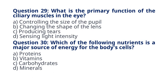Question 30. Which of the following nutrients is a major source of energy for the body's cells? A. Proteins. B. Vitamins. C. Carbohydrates. D. Minerals. The correct answer to question 30 is option C. Carbohydrates. Explanation: Carbohydrates are a primary source of energy for the body's cells, providing fuel for various physiological processes.